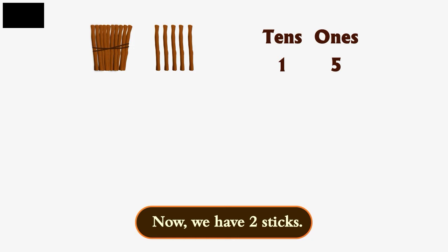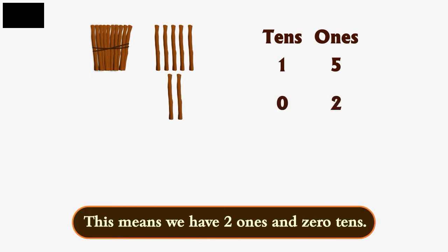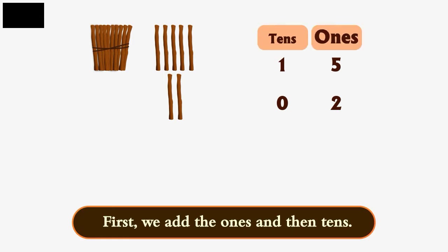Now, we have 2 sticks. This means we have 2 ones and 0 tens. First, we add the ones and then tens.